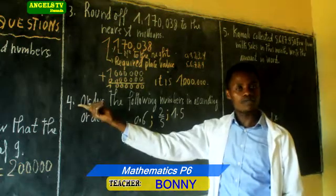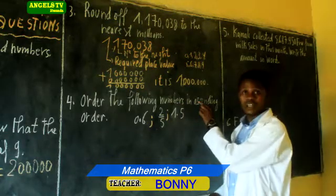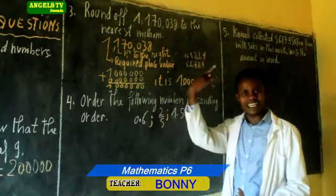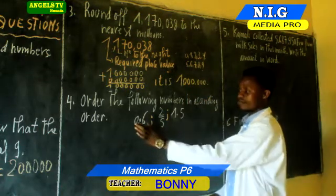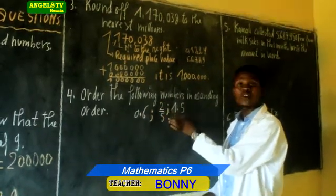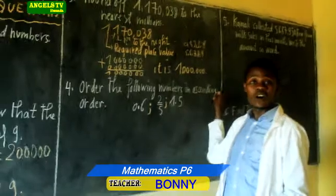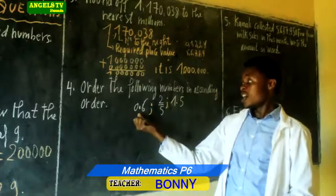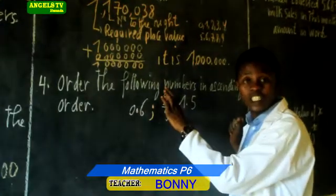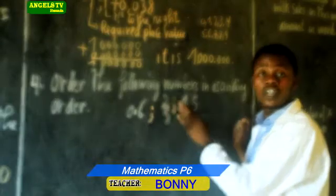Let us move on to number 4: order the following numbers in ascending order. What is the meaning of ascending order? Ascending order is arranging numbers from the smallest to the highest. Here we are having 0.6, 2/5 (or two-fifths), and 1.5. We are going to arrange those numbers in ascending order. This number 2/5 is a fraction, so first we are going to convert this fraction into decimals.